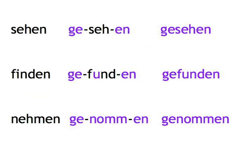The ge- at the beginning of the participle is also retained by the strong irregular verbs. However, they can be irregular in various ways, changing just the stem vowel or the whole stem. Luckily, their tail end is uniform — they all simply keep the infinitive ending -en. Sehen → gesehen. Finden → gefunden. Nehmen → genommen.